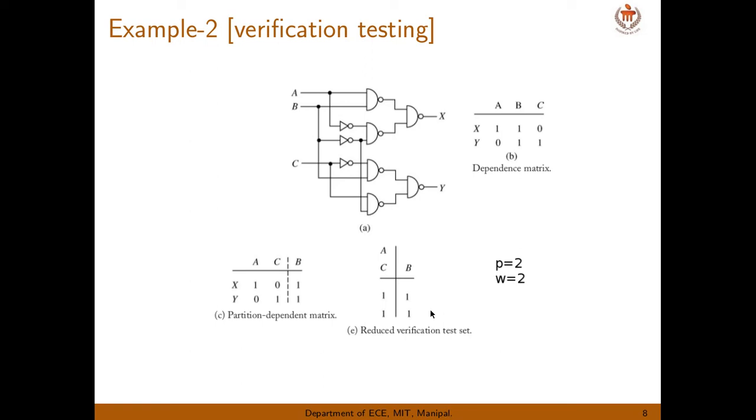What it tells is, it gives two information. One is P. What is P? The number of partitions. How many partitions we have? We have two partitions. So we will write P equal to 2. And what is W? The maximum number of 1s in any row. So maximum number of 1s in any row? If you see here, maximum number of 1, here it is 2, here it is 2. So maximum is 2. So it is 2. So we will get two information: P equal to 2, W equal to 2. So what we can do with this and how we can produce a test vector, that we will see in the next slide.